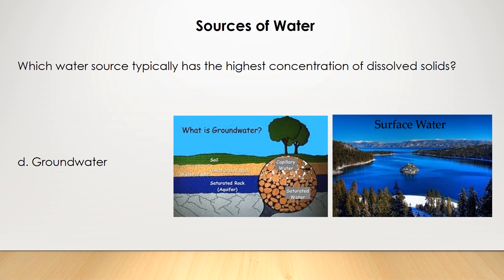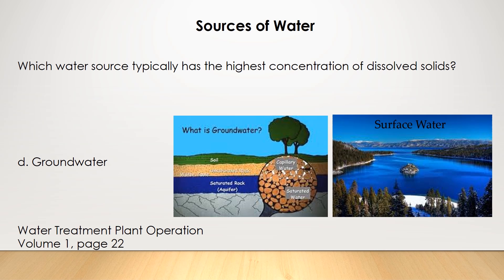The common traits of groundwater are that it has a higher concentration of dissolved solids, minerals, and hardness. In contrast, the common traits of surface water are that it contains higher concentrations of bacteria, suspended solids, and turbidity. If you want to learn more, go to Water Treatment Plant Operation Volume 1, page 22, which covers the common traits of both groundwater and surface water.